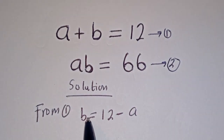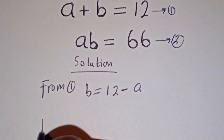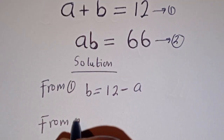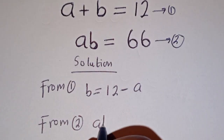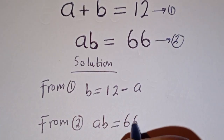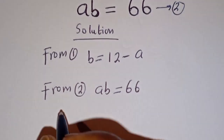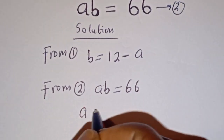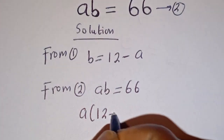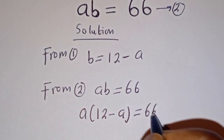Now we can substitute for B in equation 2. From equation 2, A times B is equal to 66. Then when B is equal to 12 minus A, we have A times (12 minus A) is equal to 66.